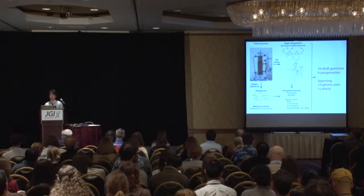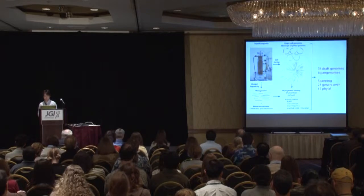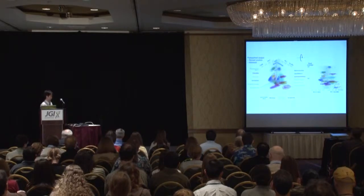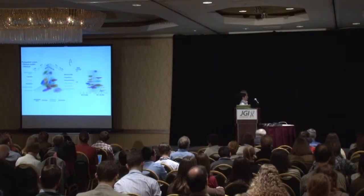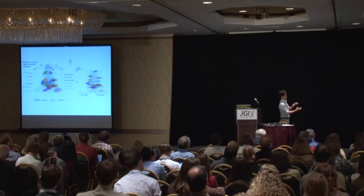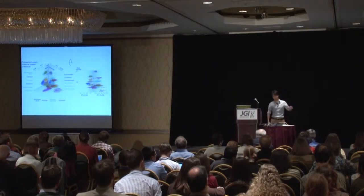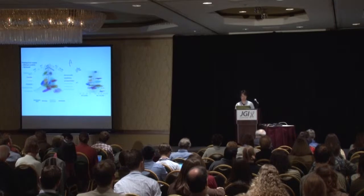We are very confident in our binning and in the high quality of the draft genomes generated. This PCA representation shows results from principal component analysis — PCA1 and PCA2 on the horizontal axes and metagenome recovery on the vertical axis. You can see really nice, very distinct clusters by color. That involved a lot of manual curation and work over the past year.